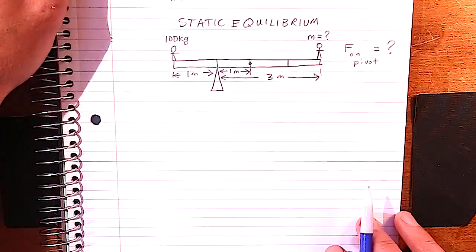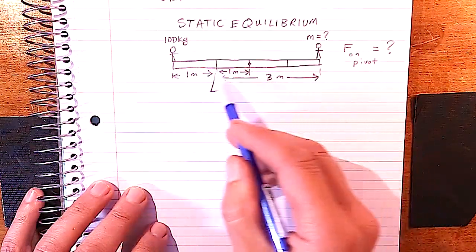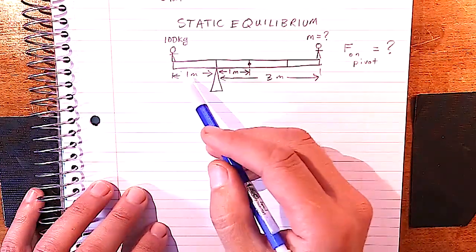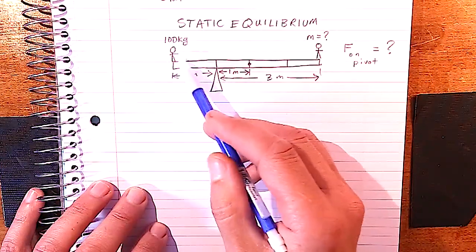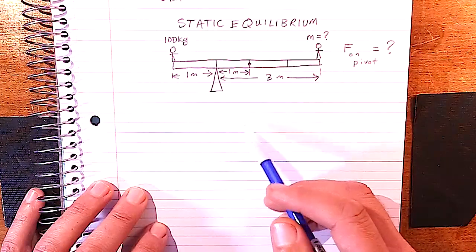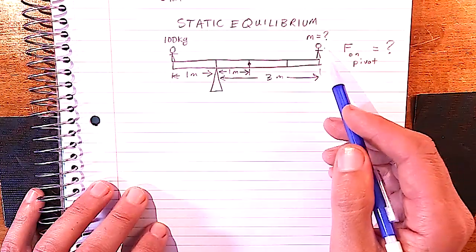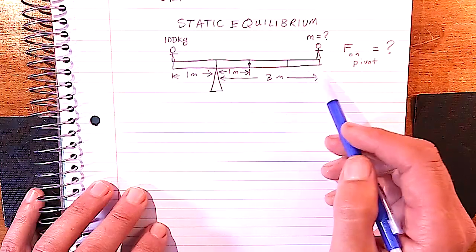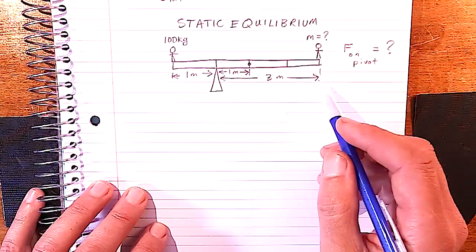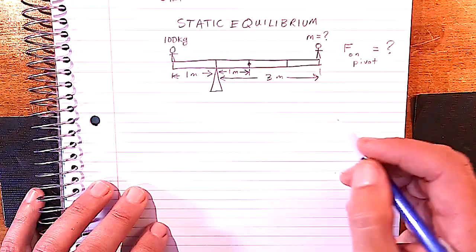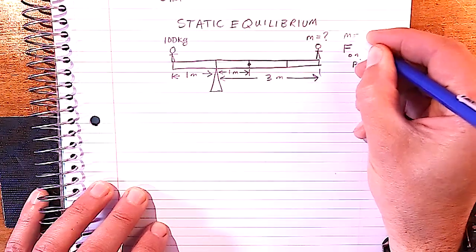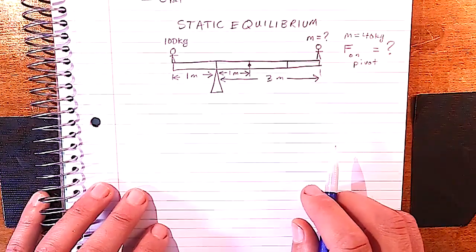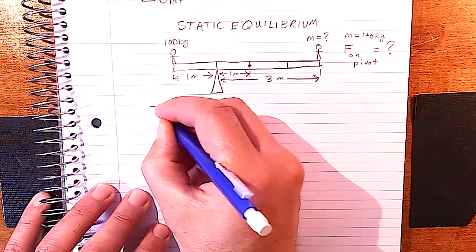Let's solve a problem to see how this works. We have a long beam with a pivot — sometimes called a fulcrum. A kid standing on one end of the beam has a mass of 100 kilograms. To balance the beam we need to put another kid on the other side. The question asks for the mass of that other kid. The mass of the beam is 40 kilograms. We also need to find the force on the pivot.